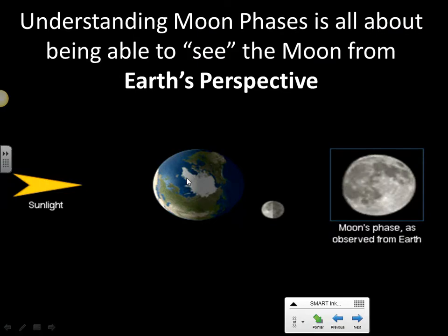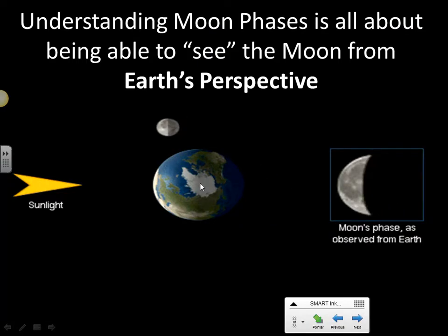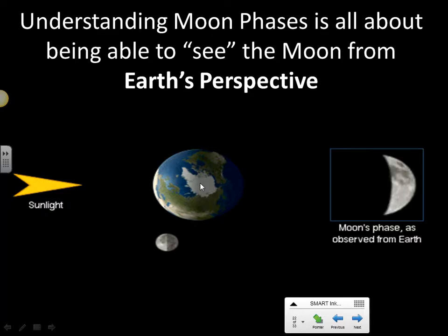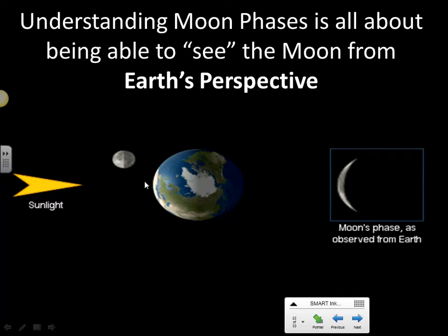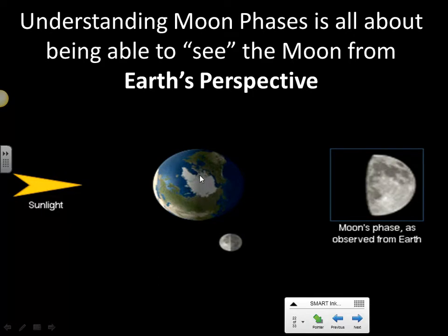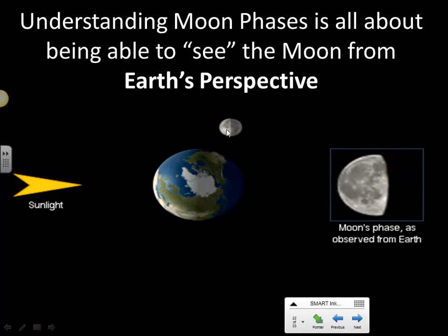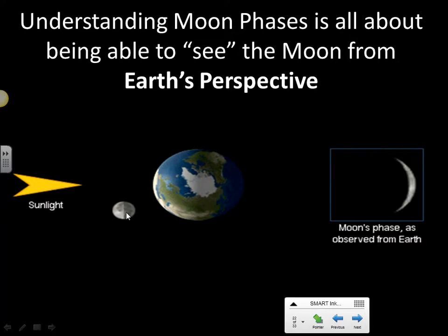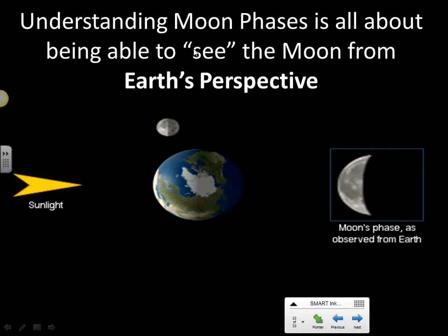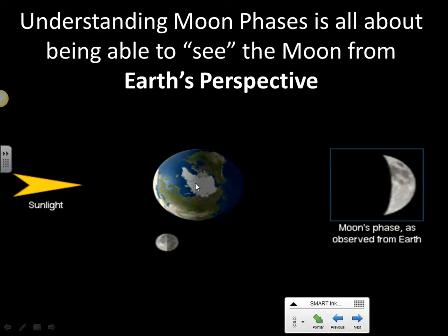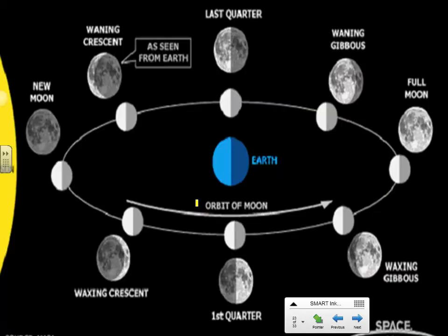Understanding moon phases is all about Earth's perspective. Many diagrams show you the outer space perspective, so to be really good at naming the phases you always have to ask: what is Earth actually seeing in that position? This animation is great because it shows the moon always half illuminated and also shows what it would appear like from Earth. You also have to pay close attention to what side the sun is coming from and which direction the moon is orbiting, as that can change the phases.